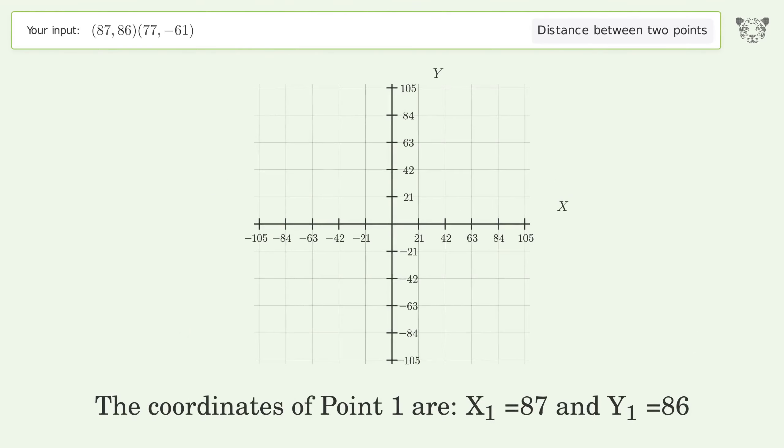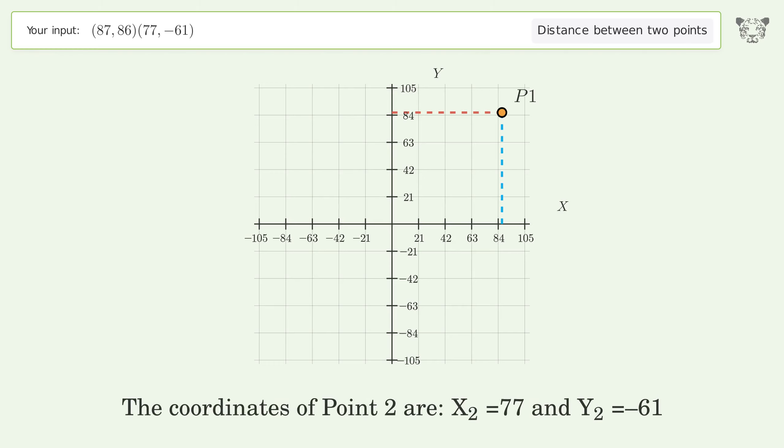The coordinates of Point 1 are x1 = 87 and y1 = 86. The coordinates of Point 2 are x2 = 77 and y2 = -61.